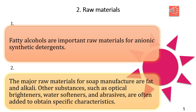An estimated 16 billion kilograms of anionic detergents are produced annually for domestic markets. There are also natural anionic detergents produced by our liver to aid the digestion and absorption of fats and oils. These natural anionic detergents are bile acids such as deoxycholic acid.